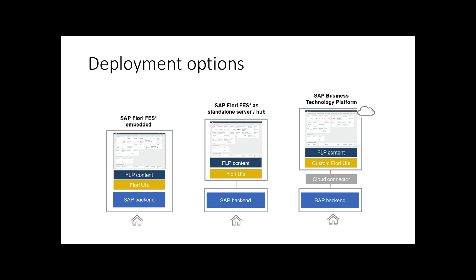The second one is the standalone hub model. A dedicated ABAP application server front-end server is deployed in a standalone system in front of the backend system. This method offers central enablement of OData access for multiple SAP application backend systems. You can use one central Fiori front-end system and connect to multiple backend SAP on-premise systems, thus offering Fiori apps for all the SAP systems in your environment. Fiori launchpad can be the single entry point for all these SAP systems. This is the best approach if you have multiple SAP on-premise systems in your landscape.